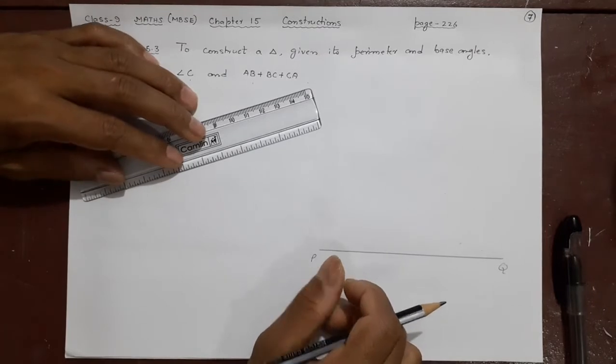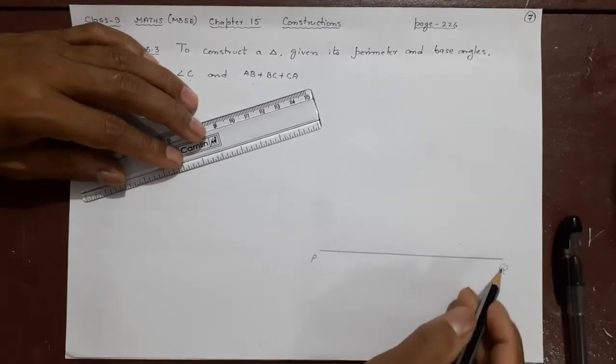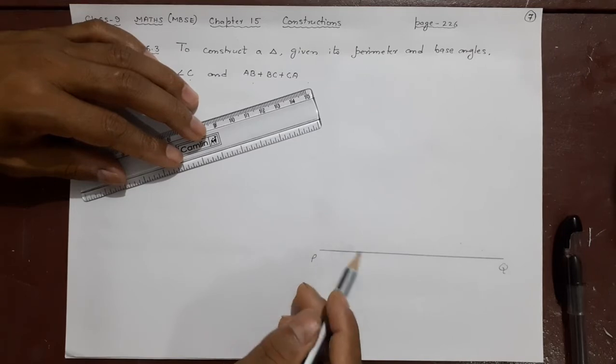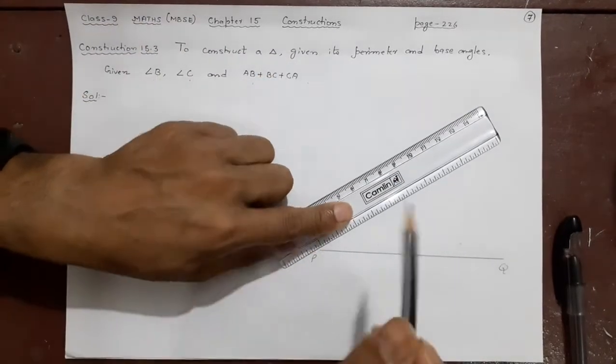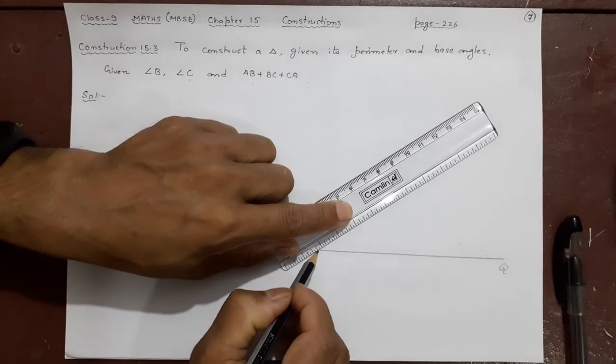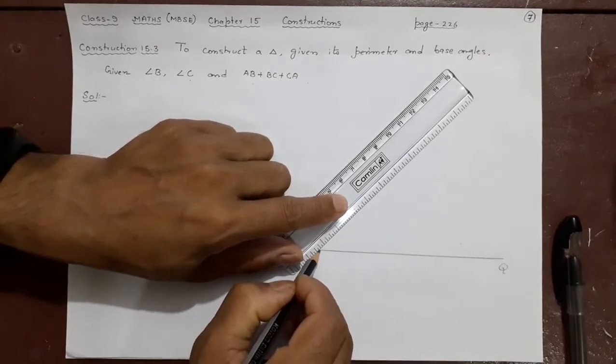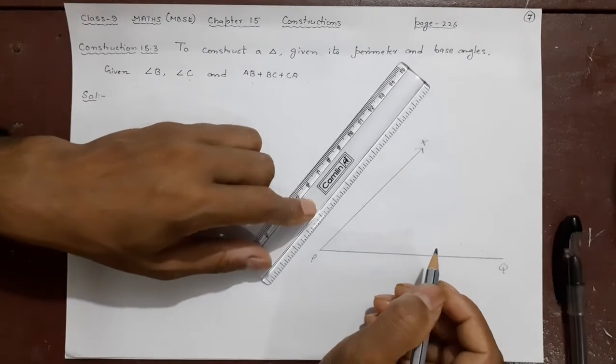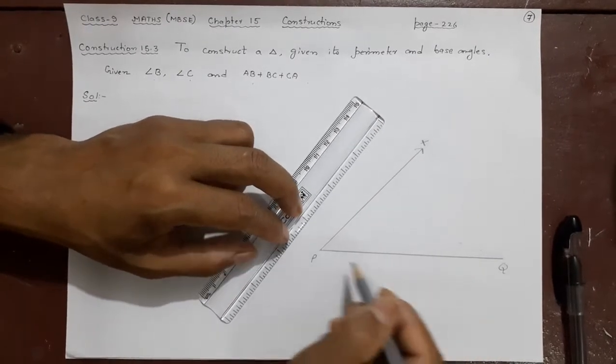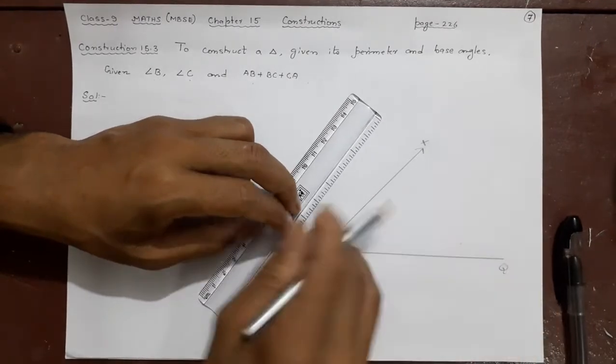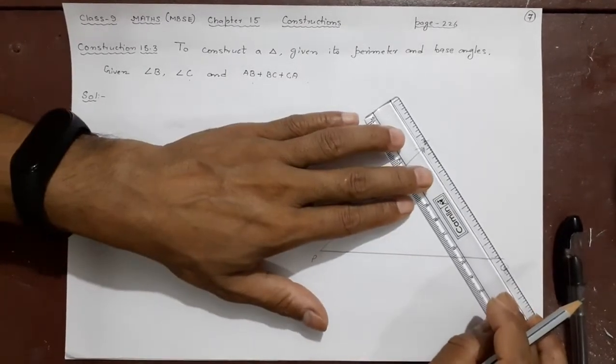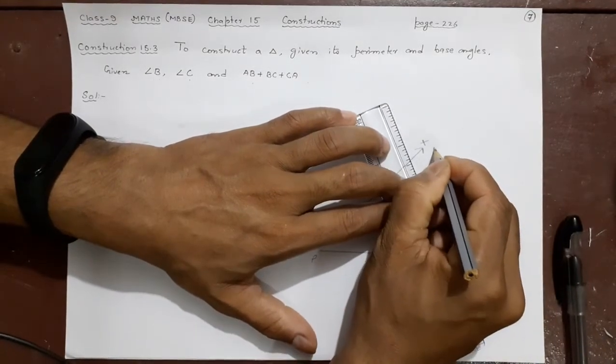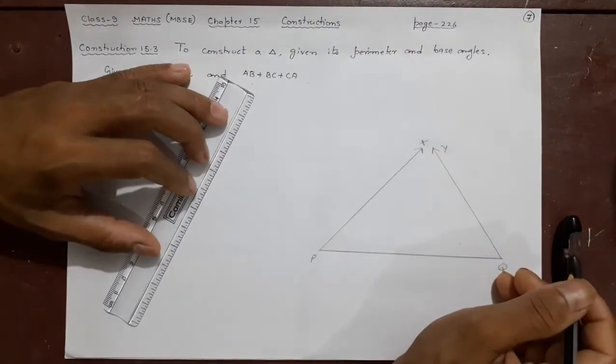After that second part is construct the angle QPX here. How much is the angle? That QPX angle you will make equal to angle B. So angle B will be given to you. That angle you will make it here. That angle you are going to make it here. Maybe like this. So that will be your QPX. After that you will make PQY this way. That also you will make here. So that angle will take compass and all. But this time just for the sake of understanding we are not using any data. Only procedure is important.